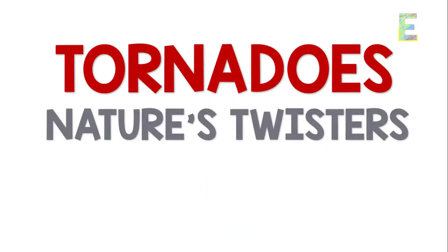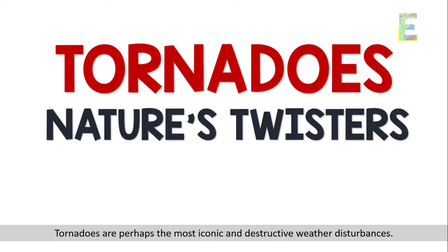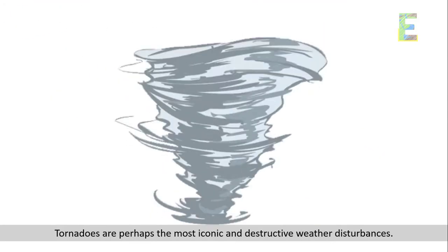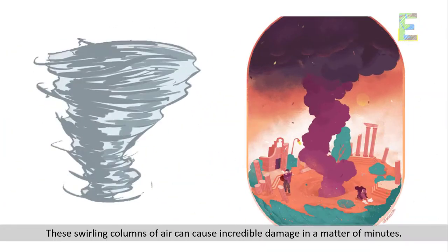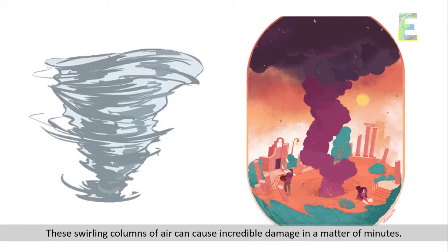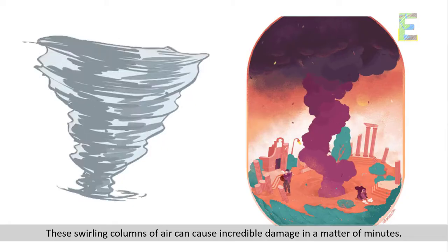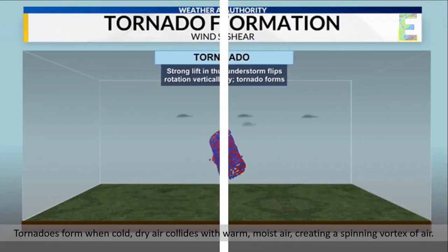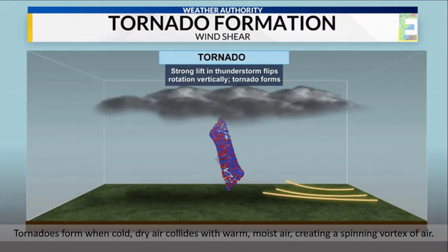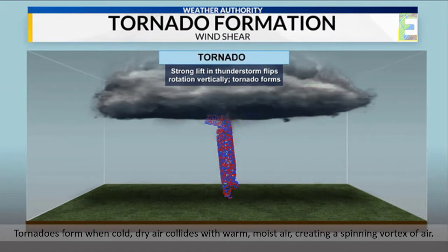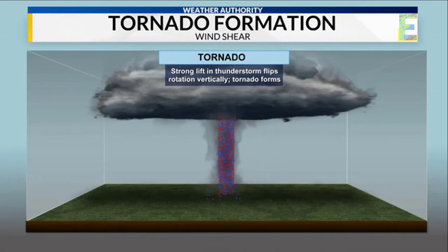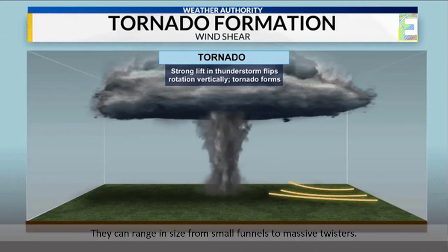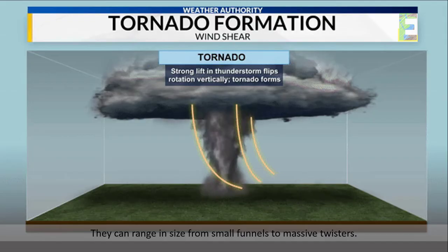Tornadoes — nature's twisters — are perhaps the most iconic and destructive weather disturbances. These swirling columns of air can cause incredible damage in a matter of minutes. Tornadoes form when cold dry air collides with warm moist air, creating a spinning vortex. They can range in size from small funnels to massive twisters.